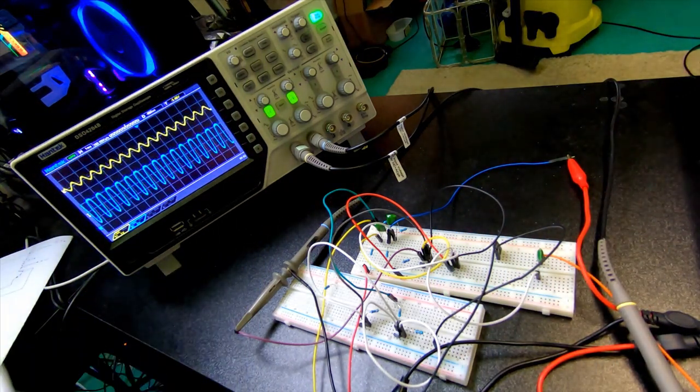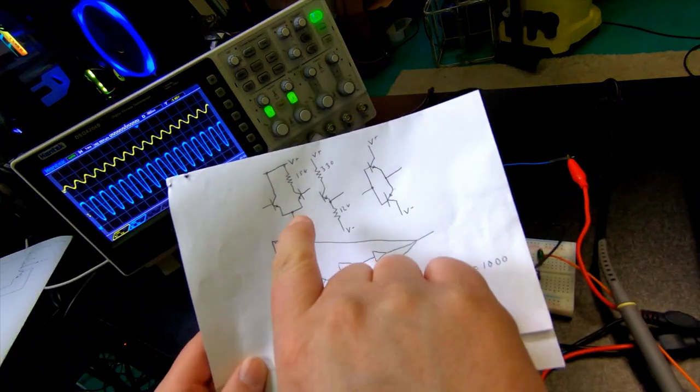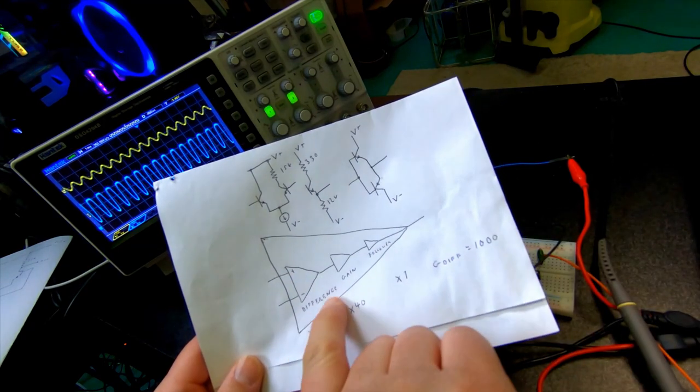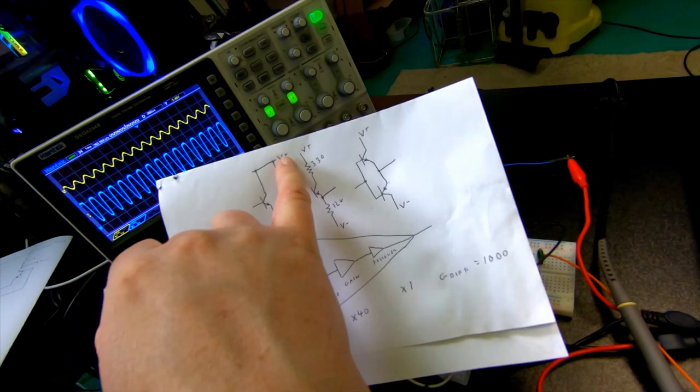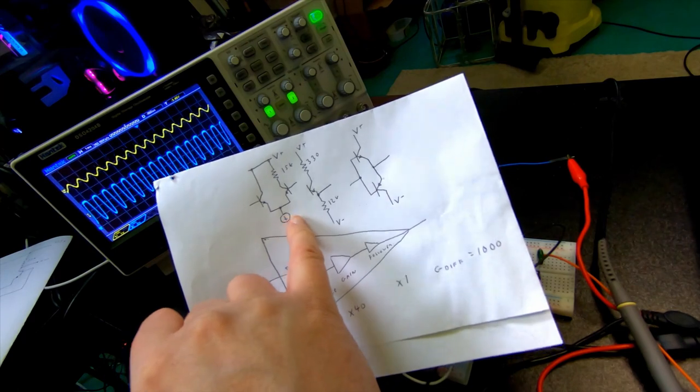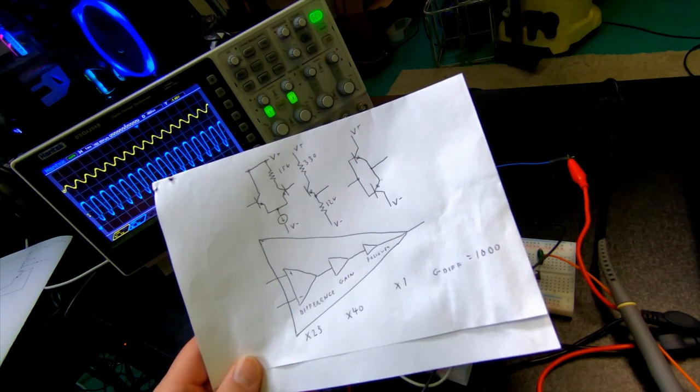So just a quick recap of what we did before. Basically, what we've done is that this is the op amp and we've implemented the difference part, so it's this here. In the previous episode we actually added this constant current source and replaced the resistor implementation.